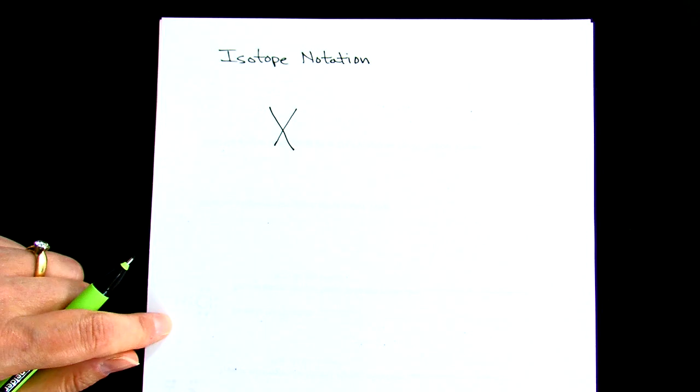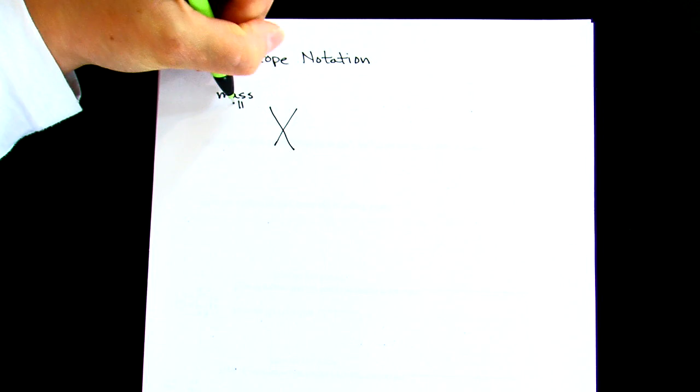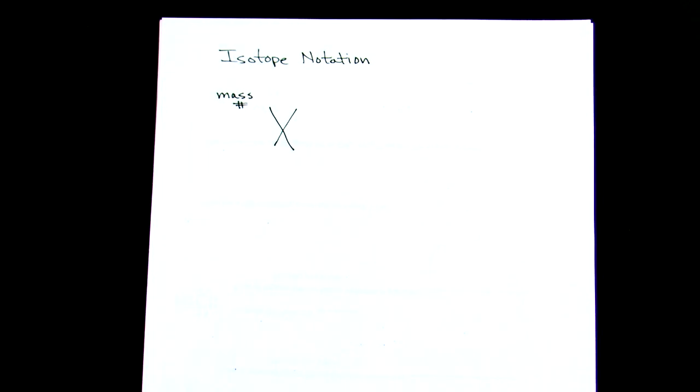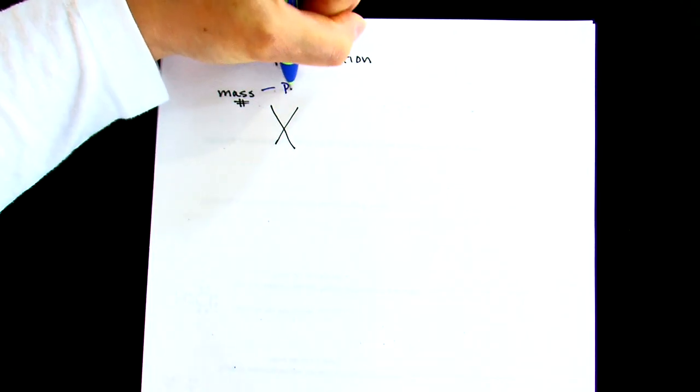And in the upper left-hand corner, there is going to be a number, and that is the mass number. If you remember from last week, the mass number is protons plus neutrons.